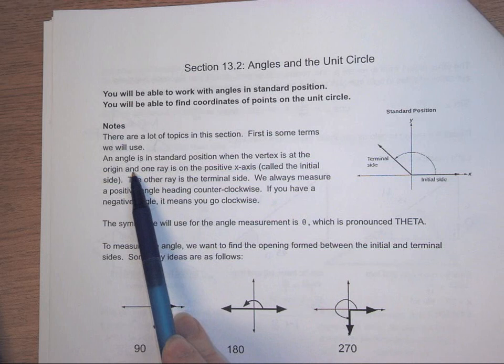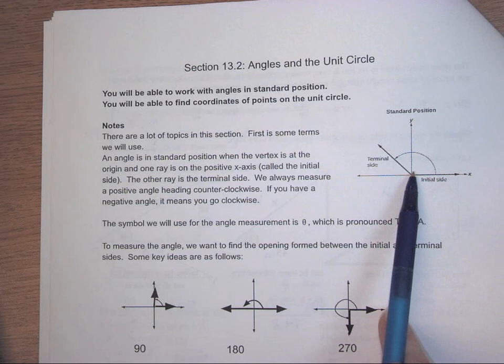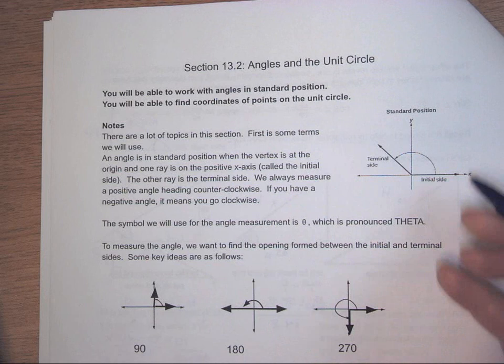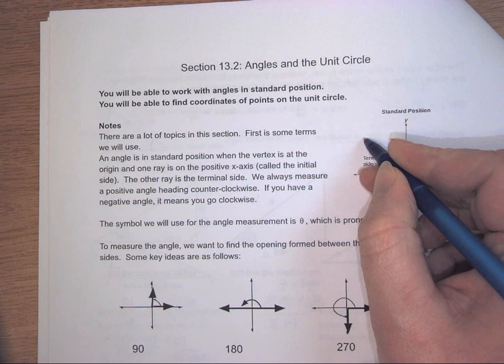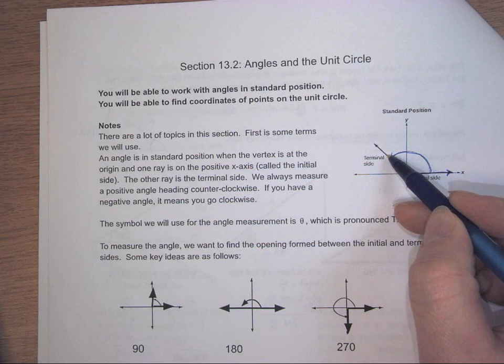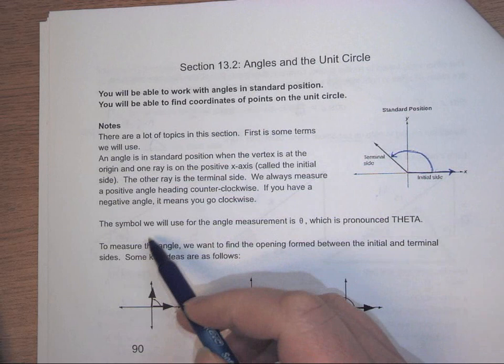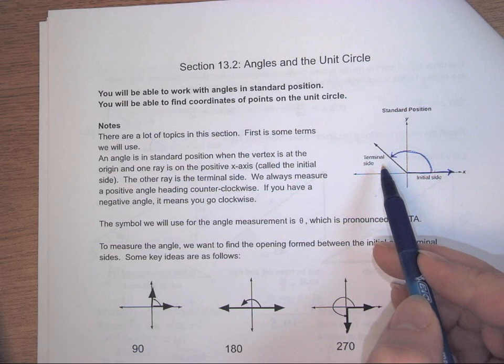There are a lot of little topics in this section. First, some terms we need to use. When we talk about an angle being in standard position, the vertex will be at the origin. One ray that forms the angle is the positive x-axis — we call this the initial side. We always start there and spin counterclockwise to a certain spot, and where we stop is called the terminal side. We always measure angles counterclockwise to make them positive. If we go clockwise, we indicate that by making the angle negative.